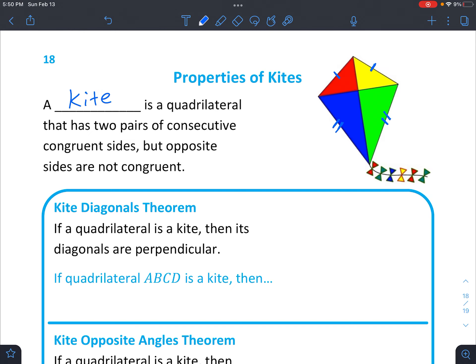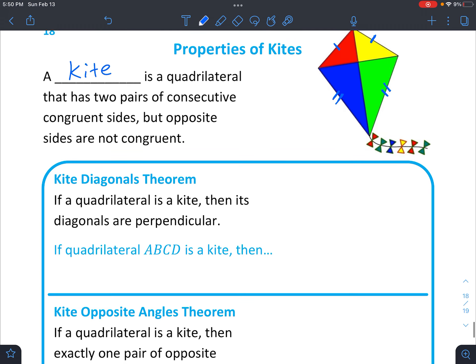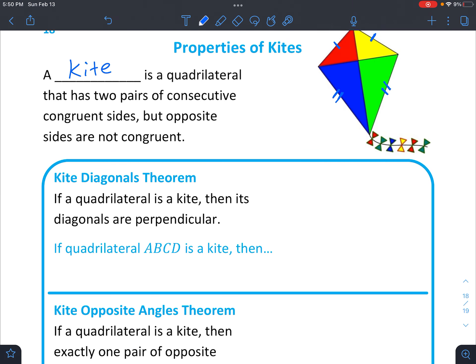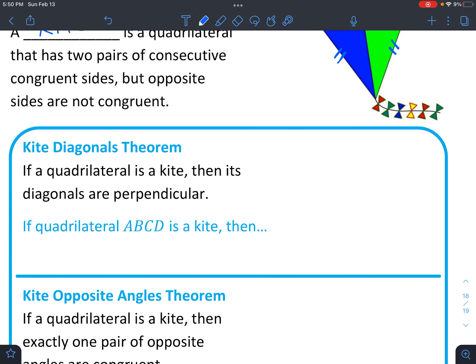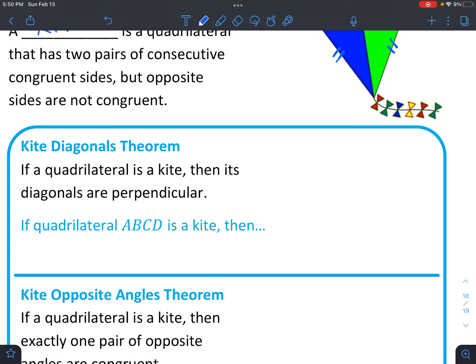You can see that they don't equal each other, the ones across from each other, or it would be a square. So there's the kite diagonal theorem. It says if a quadrilateral is a kite, then its diagonals are perpendicular.